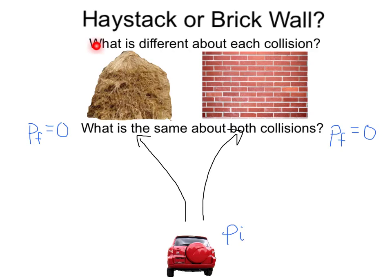The next question is, what is different about each collision? I know that both the haystack and brick wall will bring my car to a stop, but how exactly do they bring my car to a stop, and do I have a choice? That choice being, if I want to survive the collision, I want to experience as small a force as possible.